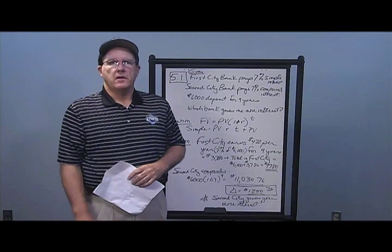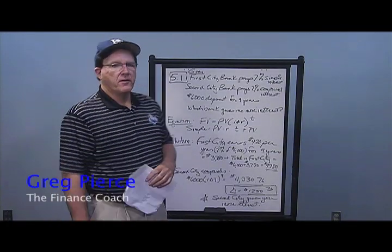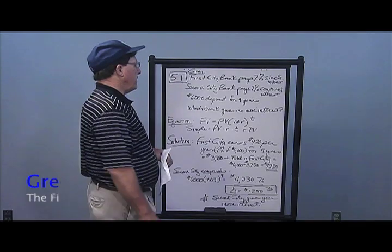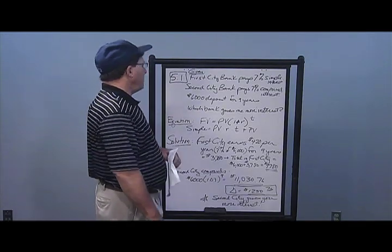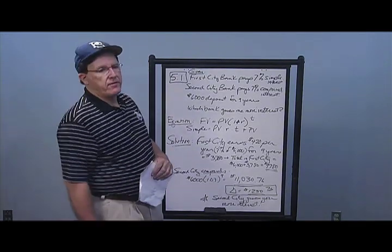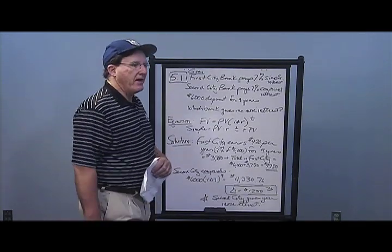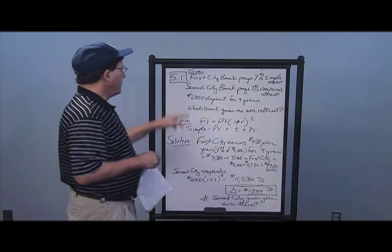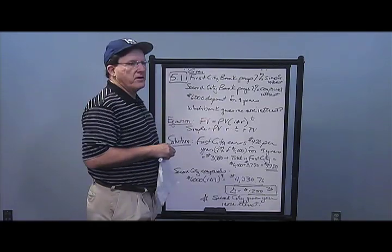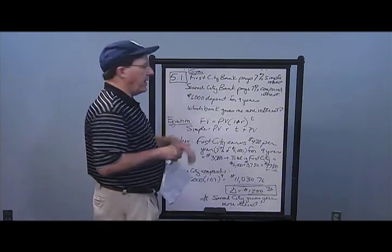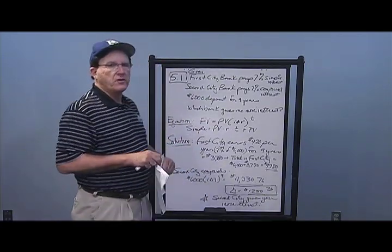In problem number one of chapter five, we have First Citibank paying 7% simple interest and Second Citibank paying 7% compound interest. You're going to leave your $6,000 deposit in the bank for nine years and you want to know which bank gives you more interest.